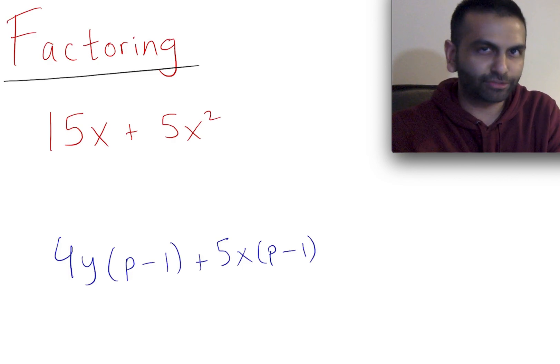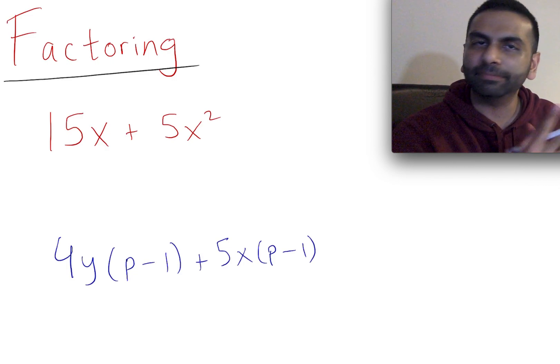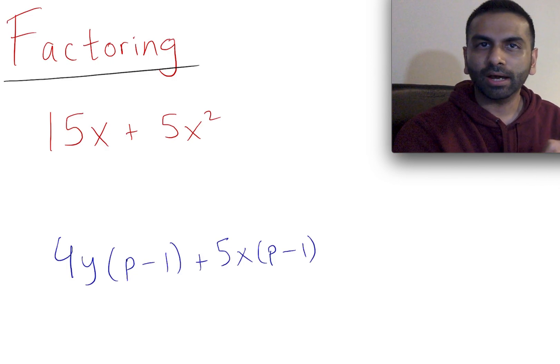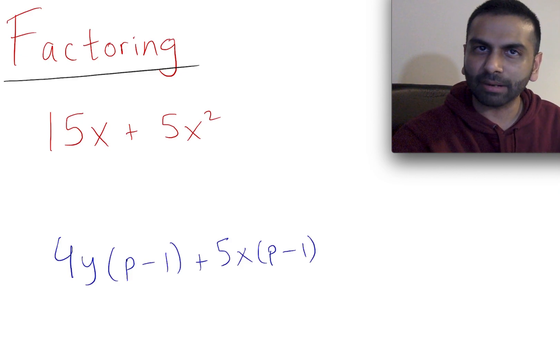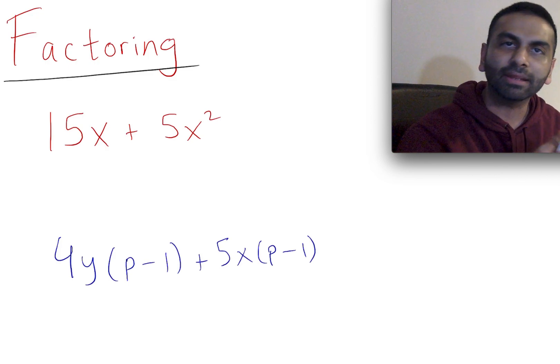In this video, we're going to talk about factoring, which is basically the opposite of expanding things out, the opposite of foiling. In expanding, you multiply things out to all the different terms using the distributive property. Here, this is the opposite of that. You're going to divide instead of multiply and pull things out rather than expanding it out.